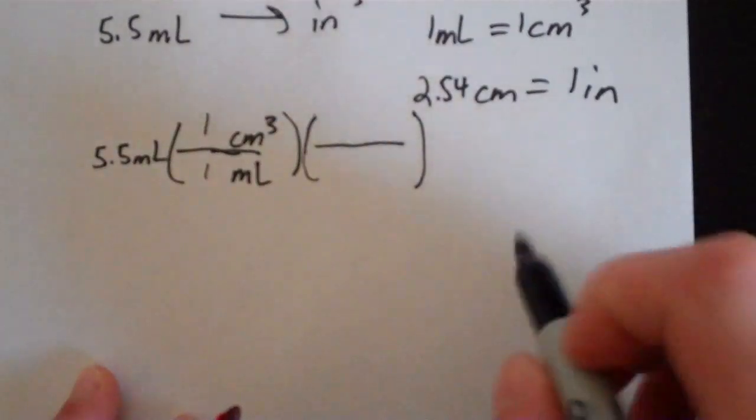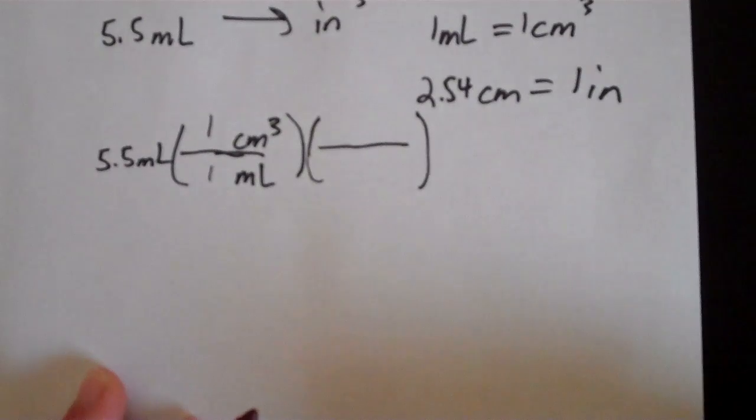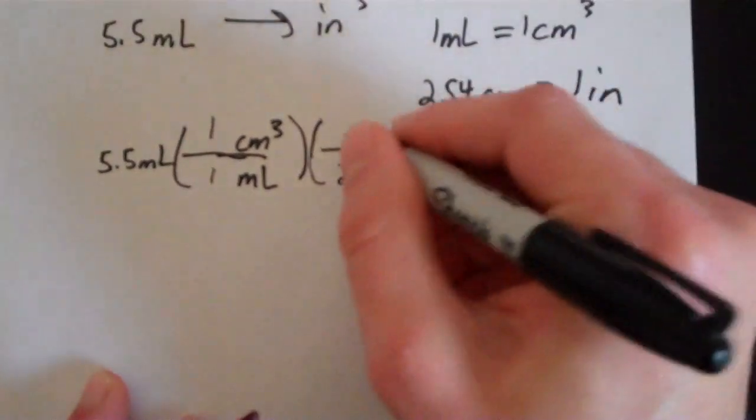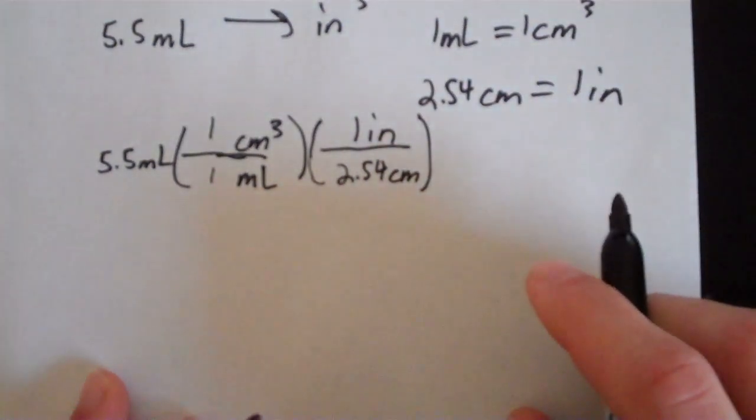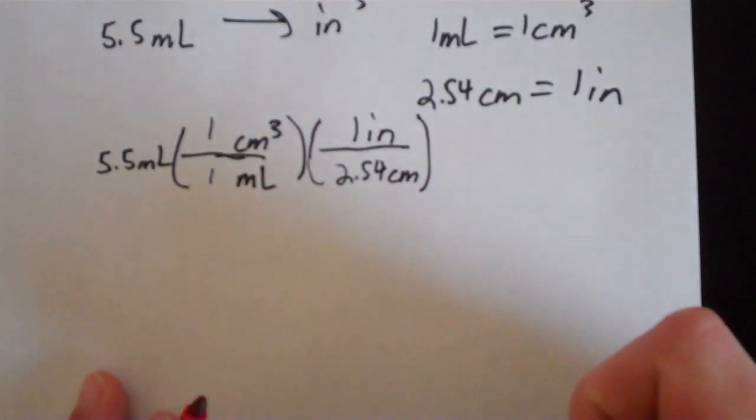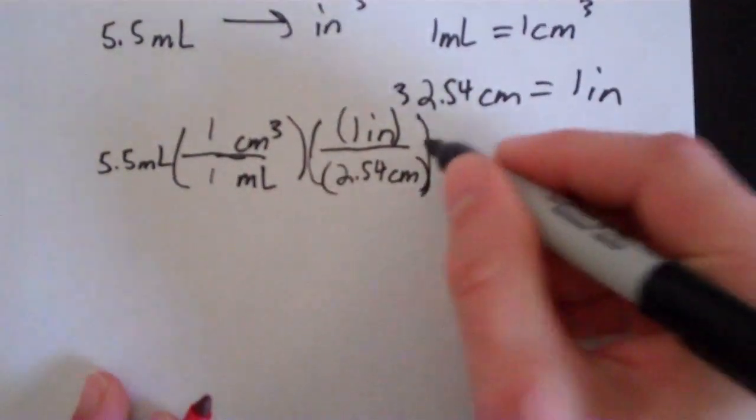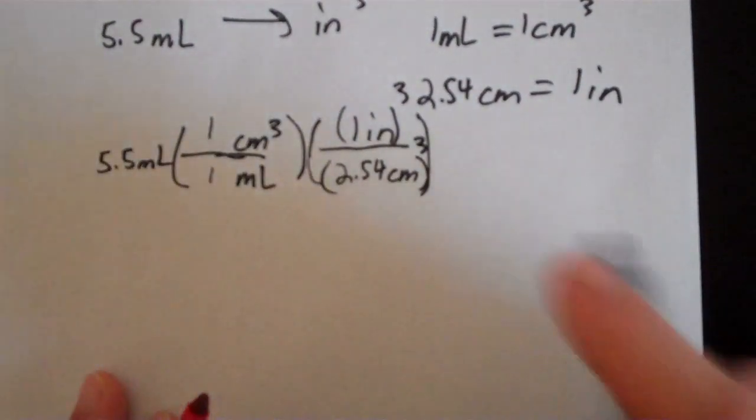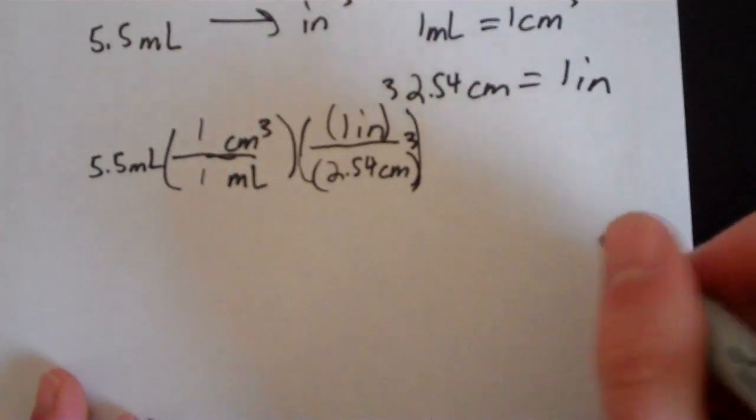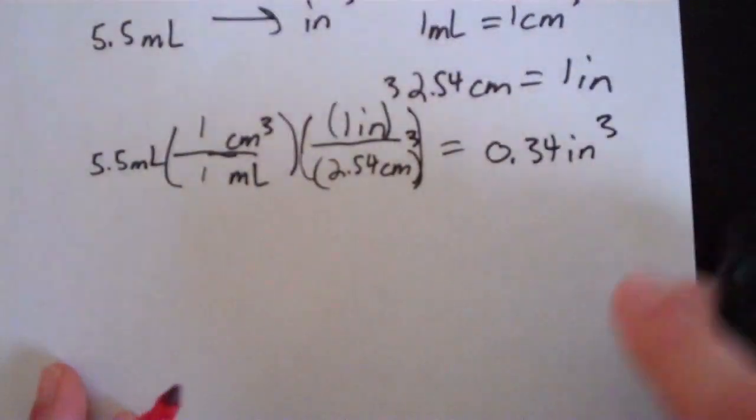This problem involves the units raised to a power that I was discussing a second ago. So we say that 2.54 centimeters equals 1 inch. Now what I'm going to do is cube both of these values. So remember to raise both the number and the unit to the power. We're going to cube this 1 inch and we're going to cube this 2.54 centimeters. Put it all into the calculator and you end up getting 0.34 cubic inches.